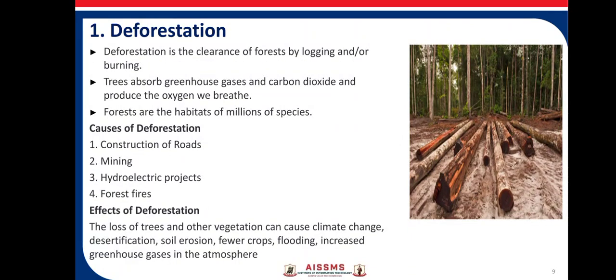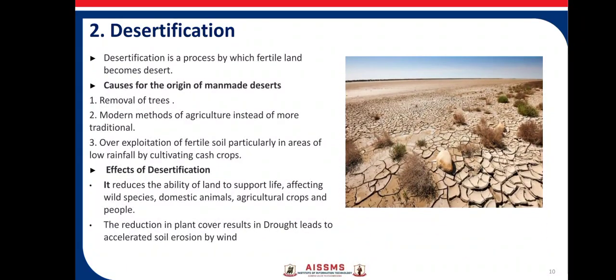Deforestation is the clearance of forest by logging and burning. Trees absorb greenhouse gases and carbon dioxide, and produce the oxygen we breathe. Forests are the habitat of millions of species. Causes of deforestation include construction of roads, mining, hydroelectric power plants, and forest fires. The effects of deforestation include climate change, desertification, soil erosion, fewer crops, flooding, and increased greenhouse gases in the atmosphere.